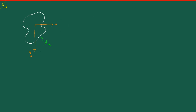So as I was saying, this ên hat is inclined to the x-axis by angle theta, and that will be the starting point of our derivations. We write ên hat as cosθ î + sinθ ĵ, which is perfectly equivalent to nx î + ny ĵ.